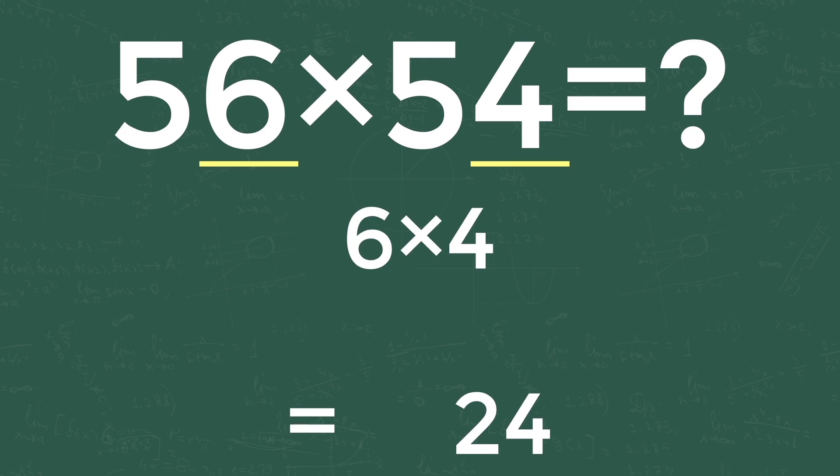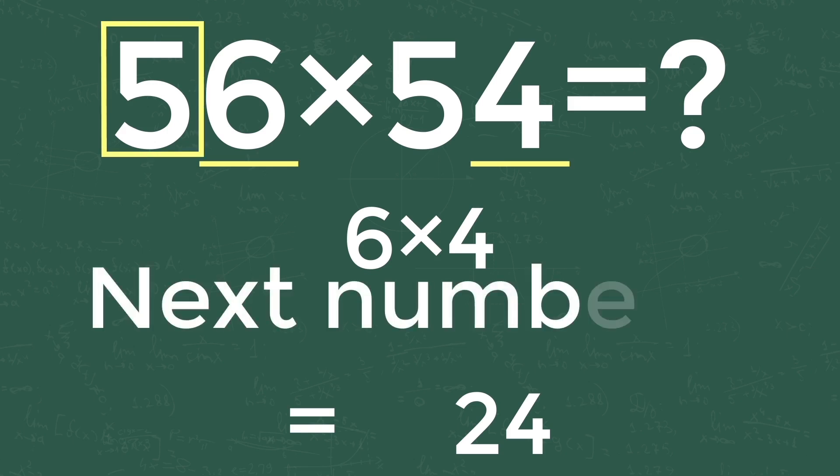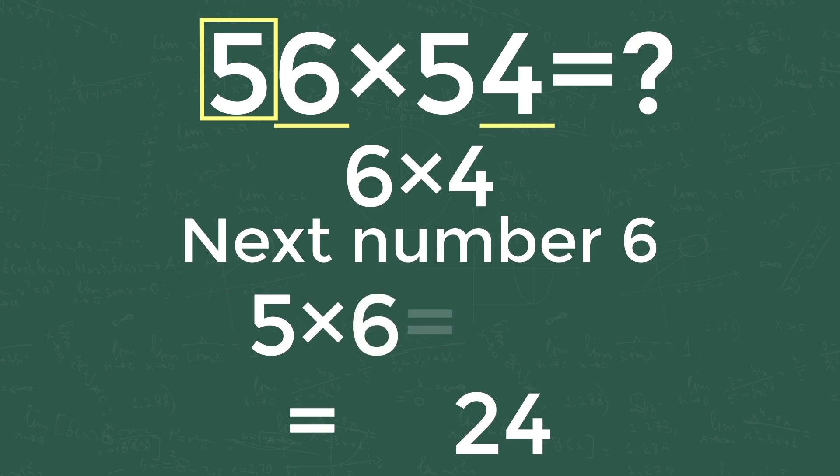Take the numbers from tens place and multiply it with the next number. In our problem tens place number is 5, so the next number of 5 is 6. Multiply 5 and 6 getting 30. Write the number in hundreds and thousands and so on. So 56 into 54 is equal to 3024. The answer is 3024.